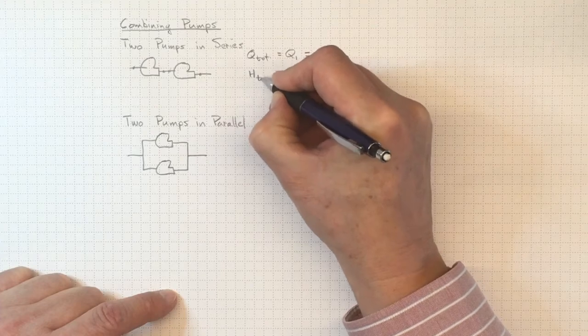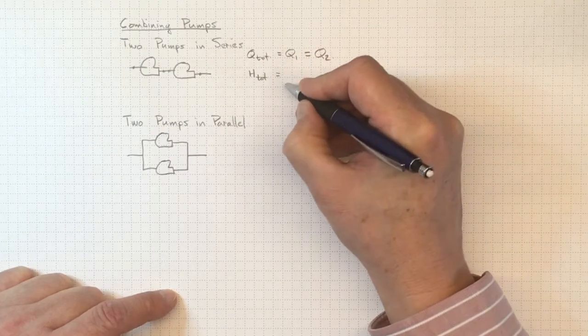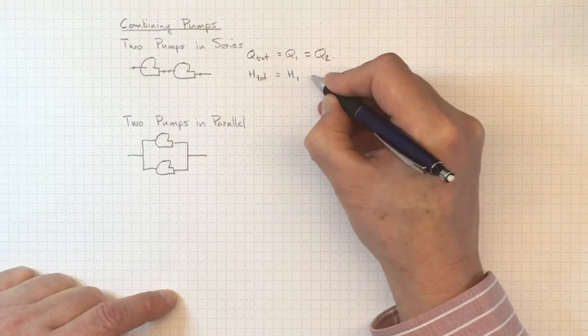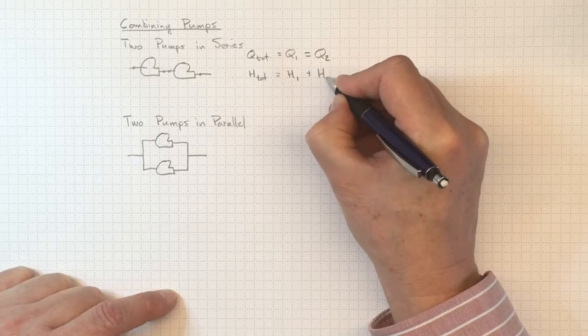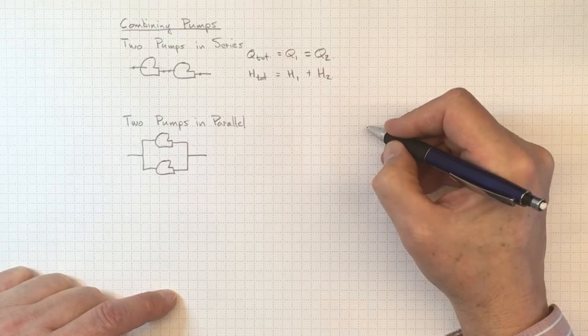So that the total head from the combination will be equal to the head rise across pump number one plus the head rise across pump number two.